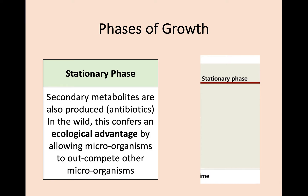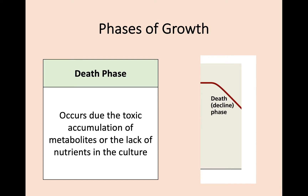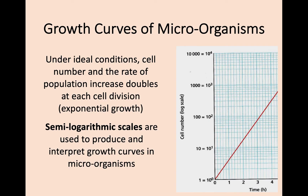Finally, we get to the death phase, where due to the accumulation of toxic metabolites or all the nutrients in the growth medium being used up, the microorganisms die out and the population number decreases. If we plot a graph of microorganism populations, we can be dealing with extremely high numbers. Ideally the rate of population increase doubles each cell division, which accounts for the exponential growth seen in the log phase.